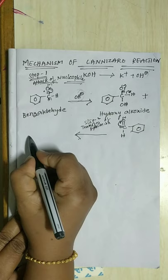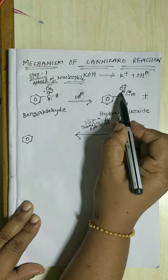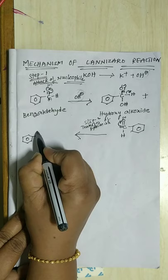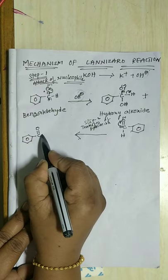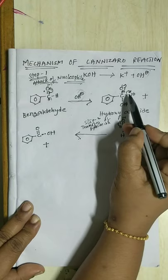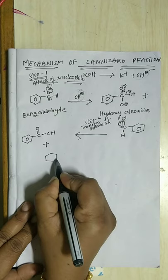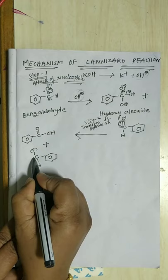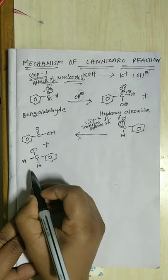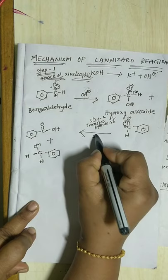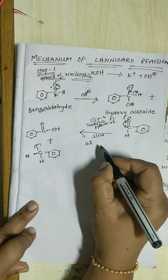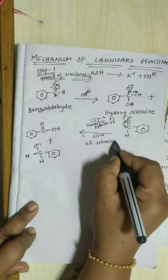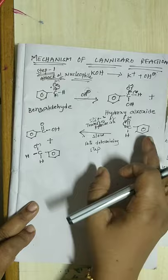The hydride ion H minus goes and attacks the carbon of the second benzaldehyde molecule, forming a carbon-oxygen double bond. This hydride transfer step is a slow step and the rate-determining step — the rate of reaction depends upon this step.